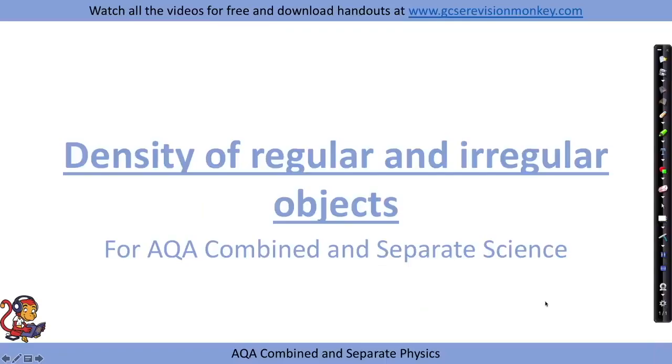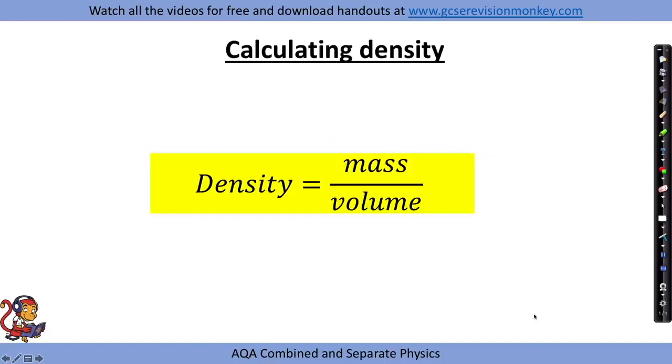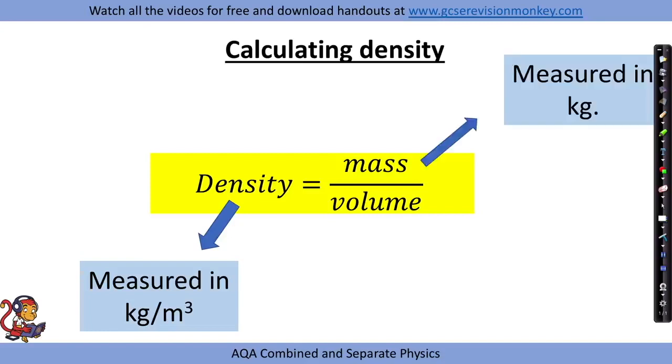Density of regular and irregular objects required practical. For this practical we need to recall the equation: density equals mass divided by volume, whereby density is measured in kilograms per meters cubed, mass is measured in kilograms, and volume is measured in meters cubed.